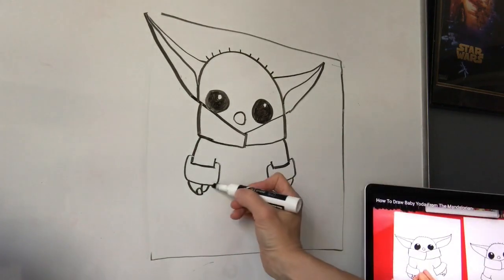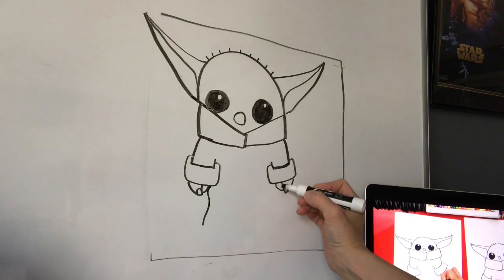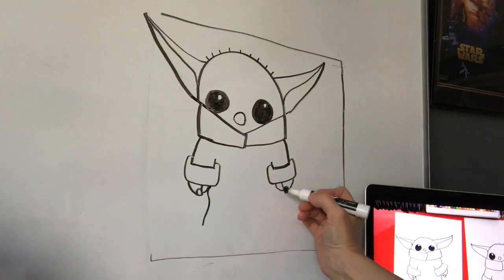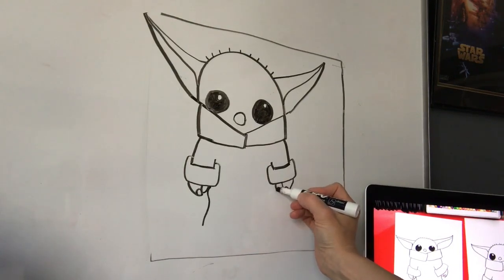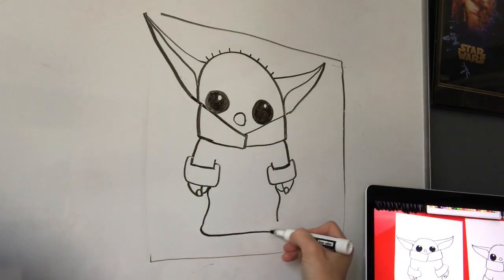After that we're gonna do this little kind of an S shape, a little curvy line down. And the same on this side, next to his hand. Curvy line down. And we'll connect them at the bottom. Go across.